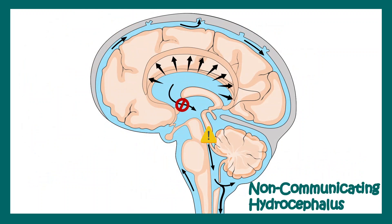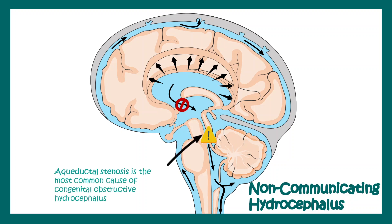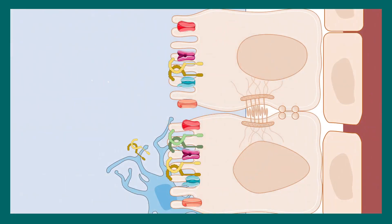Non-communicating hydrocephalus can result from a birth defect that blocks the passageway between ventricles. One common scenario is aqueductal stenosis, which is generally congenital and represents an obstructive form of hydrocephalus. This leads to accumulation of CSF in the lateral ventricles, building up massive pressure.